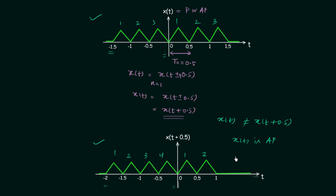So we need to add something to our definition to make it correct. A signal is said to be periodic if it repeats itself after a regular interval of time AND the repetition of a particular structure — a triangle in this case — or value should be from minus infinity to infinity. Here the repetition was only from −1.5 to 1.5, not from minus infinity to infinity, which is why the signal changed when we performed the shift.